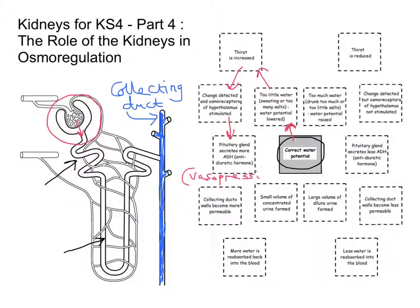ADH is sometimes called vasopressin, so if you see that word it means ADH. This hormone makes the collecting ducts — the walls of the collecting ducts highlighted in blue on the left diagram — more permeable to water. So if the water level in the blood is really low and we're trying to save water, we want this hormone released. What ADH, this antidiuretic hormone, does is make the collecting ducts more permeable to water so we can reabsorb it.